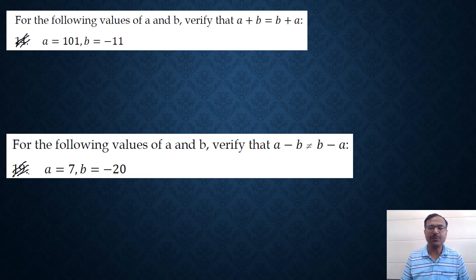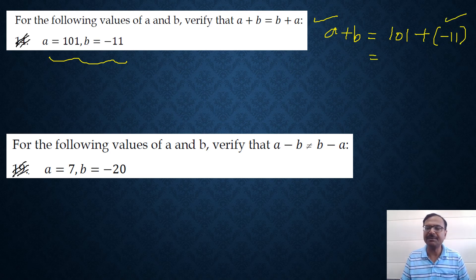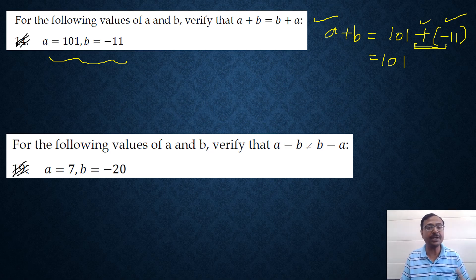So the first question says for the following values of A and B, verify that A plus B equals B plus A. So A plus B. In this case, you have A as 101 and B as minus 11. So you notice one thing here. I put minus 11 in the bracket. Why? Because there's already a plus sign here. So I cannot have two signs together without the use of brackets. That is one important thing. So 101 and then plus and minus coming together get converted to a negative. So minus 11 and that gives me 90 as the left hand side.